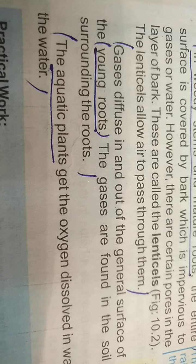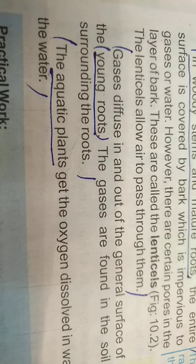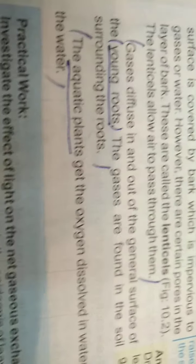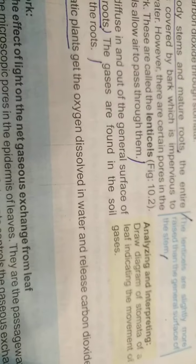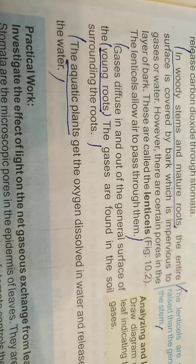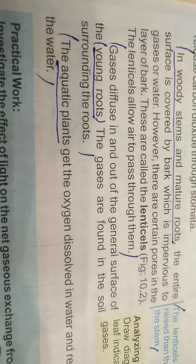Gases diffuse in and out of the general surfaces of the young root; gases are found in the soil surrounding the roots. Aquatic plants get oxygen dissolved in the water and release carbon dioxide into the water. So this is all about gaseous exchange in plants.